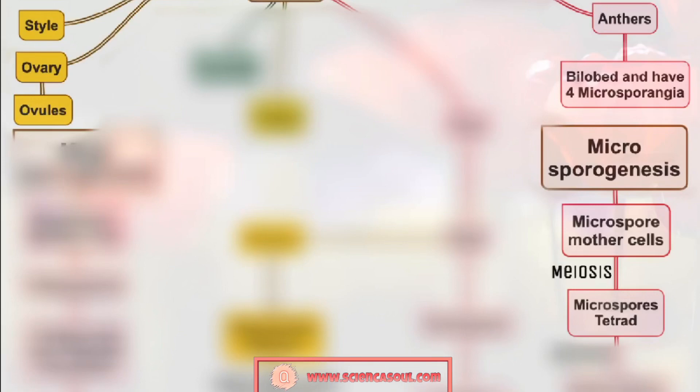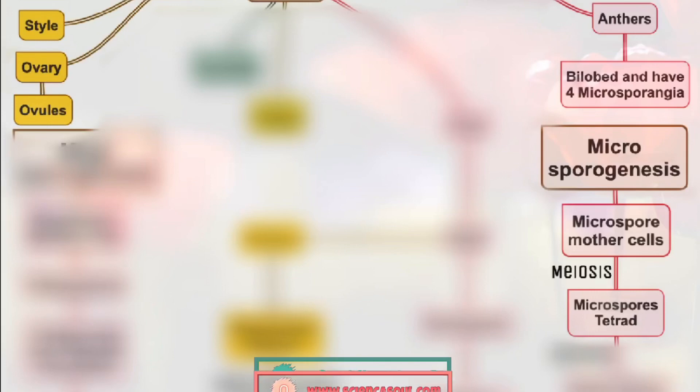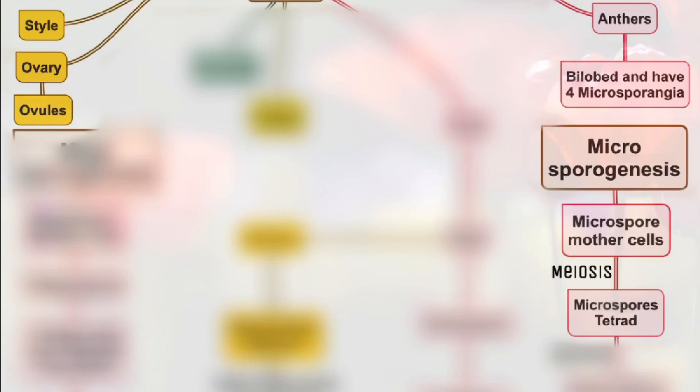The microspore mother cell is a diploid cell in plants that divides by meiosis to give rise to four haploid microspores. In flowering plants, MMCs (microspore mother cells) are formed within the pollen sacs of the anther by mitosis. The microspores develop into pollen grains. A tetrad means there are four cells, all haploid in nature. Next, the microspore tetrad undergoes mitosis to produce pollen grains.